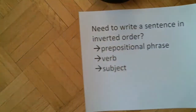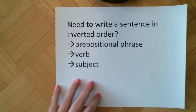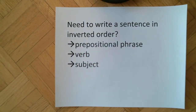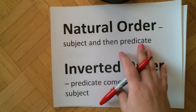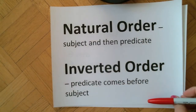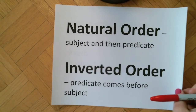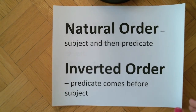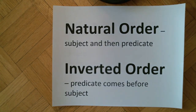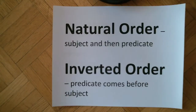So to recap: find a prepositional phrase or adverb, make up a verb and subject to go with it, and you've got your own inverted order sentence. Natural order is what we usually use; inverted order is the alternative. Inverted order sentences show up more often in things like poetry, but also in questions, and they're not actually all that rare. If you know what you're looking for, you'll likely come across some in your reading or even your own writing in the next couple of days. Alright scholars — go give it a try on your own!